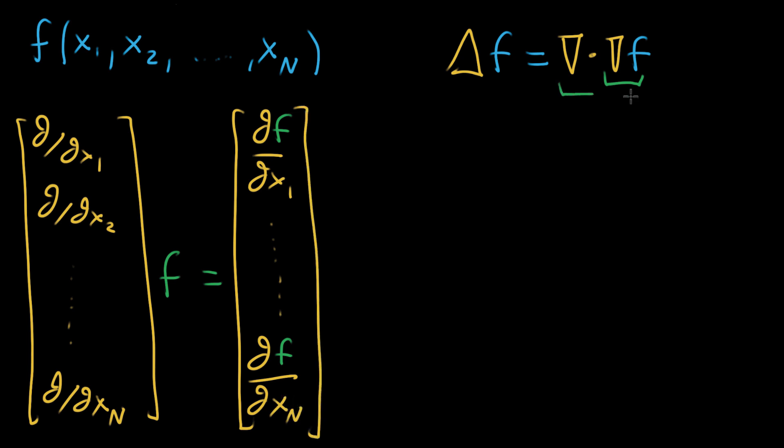And the divergence of that, and just to save myself some writing, I'm going to say you take that Nabla operator, and then you imagine taking the dot product between that whole operator and this gradient vector that you have here. What you end up getting is, well, you start by multiplying the first components, which involves taking the partial derivative with respect to x1, that first variable, of the partial derivative of f with respect to that same variable. So it looks like the second partial derivative of f with respect to that first variable.